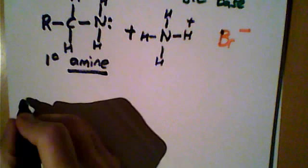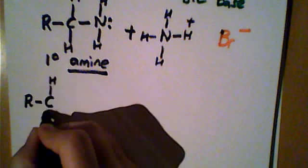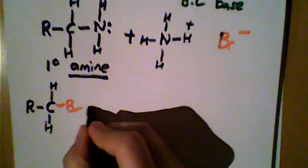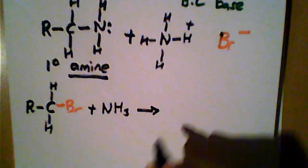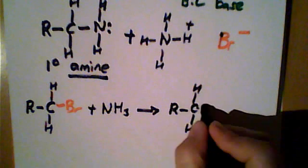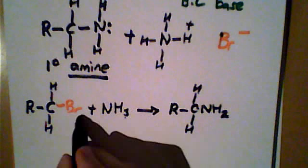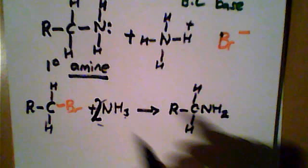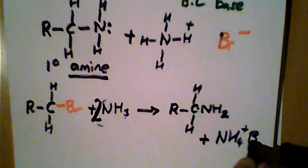The overall equation for this reaction is: haloalkane plus ammonia — it's a simple substitution reaction to form a primary amine (NH₂) and hydrogen combines with the bromine. If there is an excess of ammonia, two equivalents are used, forming the primary amine plus ammonium bromide (NH₄⁺ Br⁻).